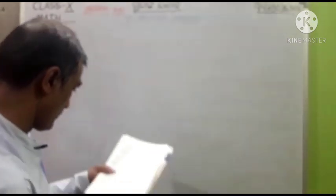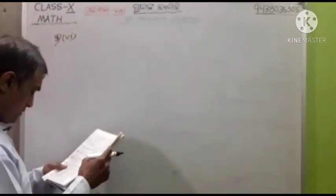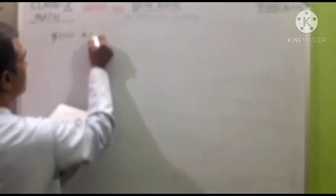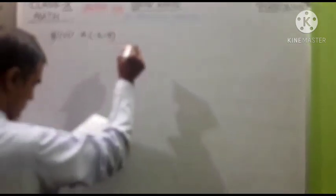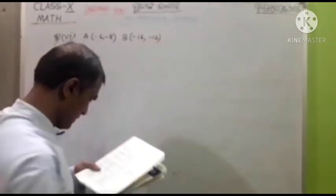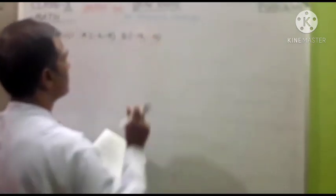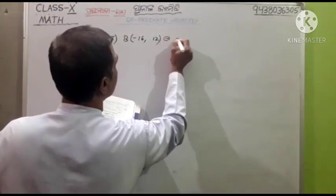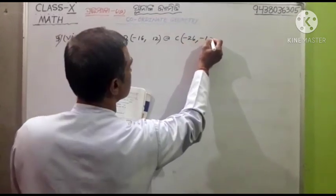Okay, now what is it? Number 5. Here we have 6 points. The values are A: minus 6, minus 8. B: minus 16, minus 12. I will give you A, B, C: minus 16, minus 12. C: minus 26, minus 18.